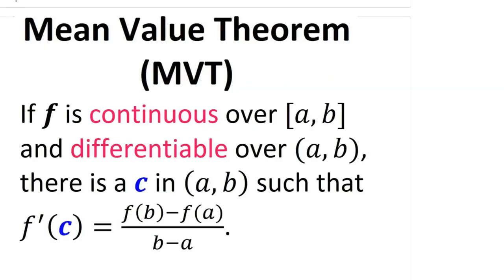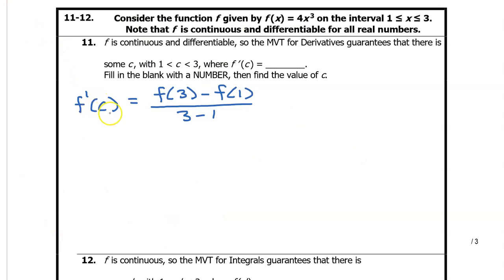I said the mean value theorem for derivatives, but I could have just said the mean value theorem. The key is that f prime at c will equal the average rate of change for some value c, so we're using this formula. In other words, f prime at c will equal this expression for some value c.